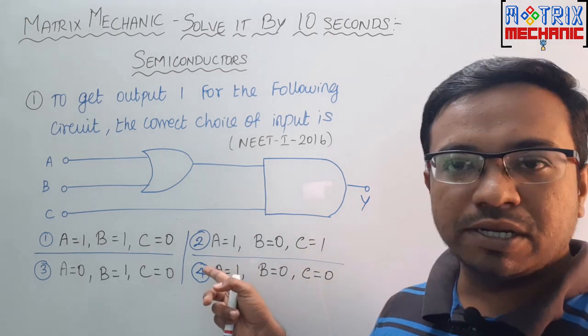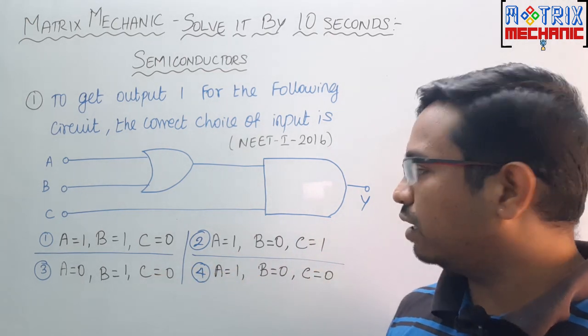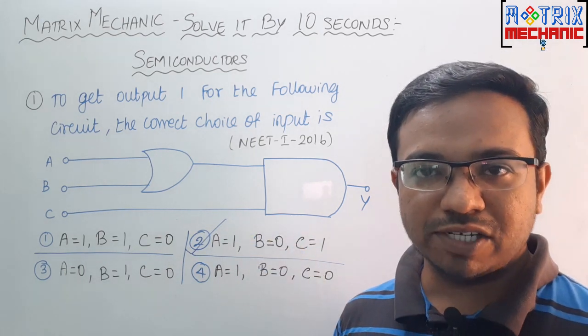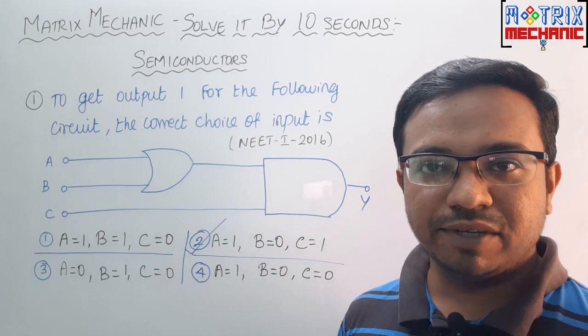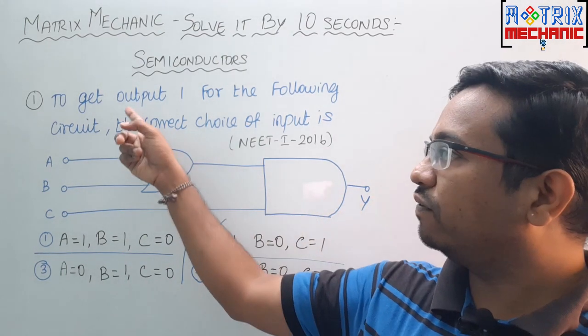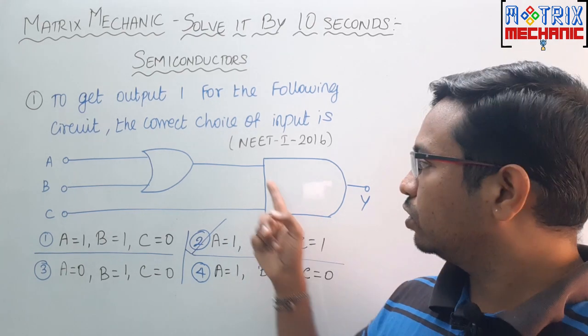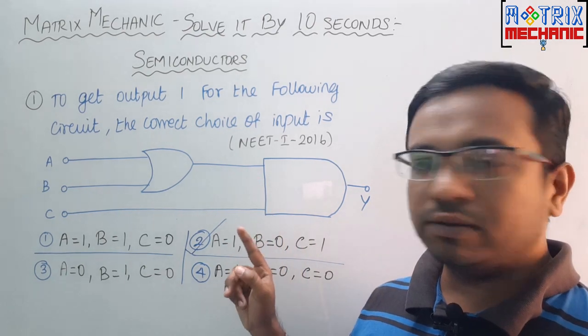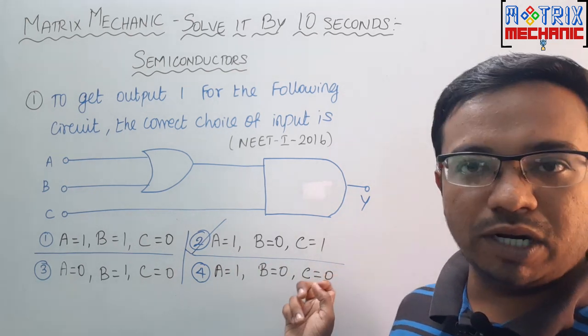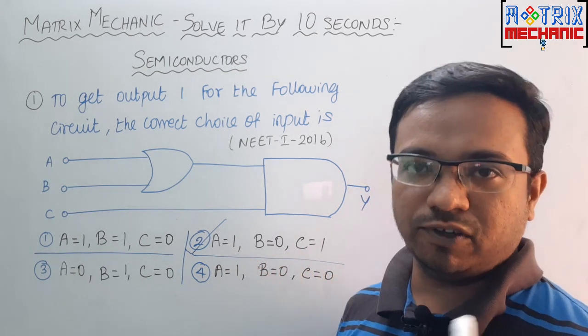Now just go through this option. So you can easily eliminate the other options and the answer is 2. Have you understood how to solve this by 10 seconds? So the AND gate, the answer for the AND gate is 1 because we have given the output of the AND gate is 1. So the 2 inputs will be 1. So definitely it should be 1 means C should take the value of 1. So that is mentioned in only one of the options.